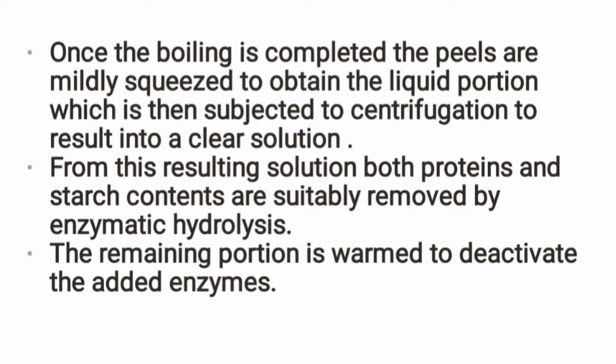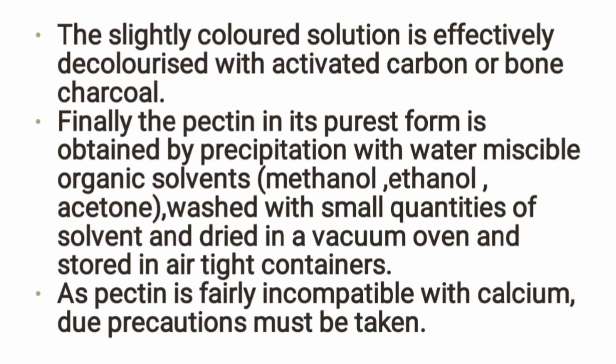We then remove proteins and starch by enzyme hydrolysis. The remaining portion is warmed to deactivate the enzyme. The slightly colored solution is decolorized by adding activated carbon or bone charcoal. For purification, ethanol or acetone is added to cause precipitation, and this can be repeated for further purification. Finally, it is dried in a vacuum oven and stored in airtight containers. Note: Pectin is incompatible with calcium, so be cautious in storage as calcium degrades pectin's nature.